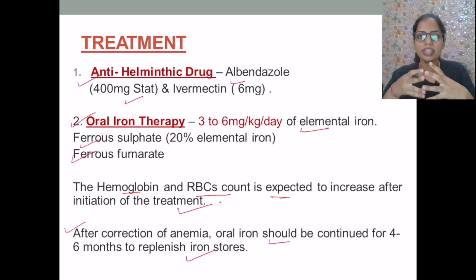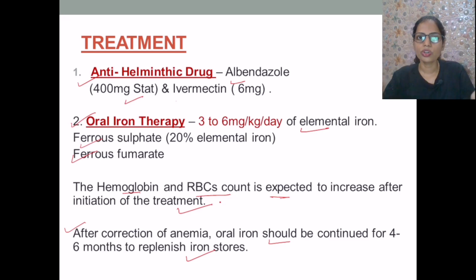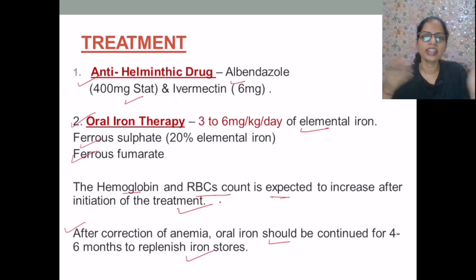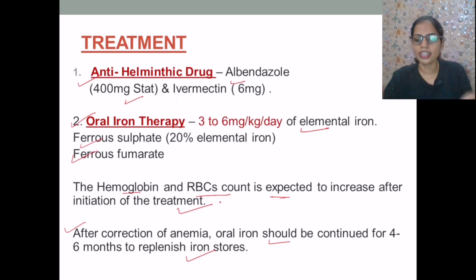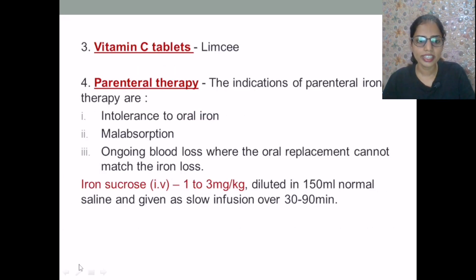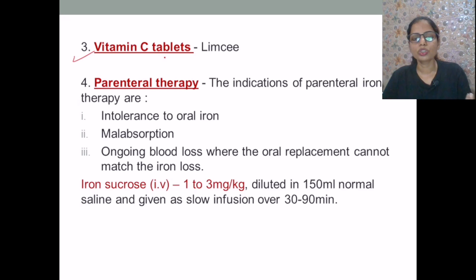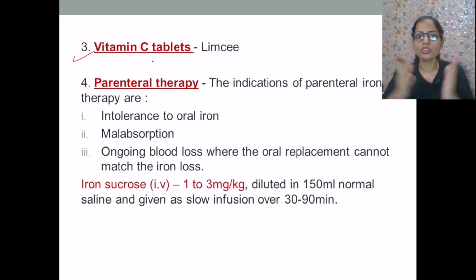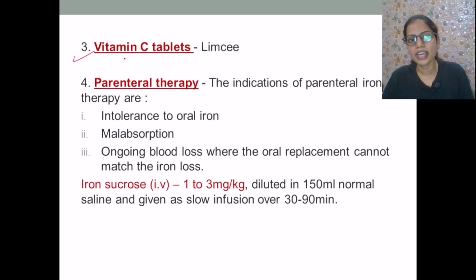To confirm that treatment is going in the right direction, after three to four weeks, the patient can be subjected to reticulocyte count to check if it is increasing. Additionally, we can give vitamin C tablets, which are important because they promote iron absorption and help convert iron into the ferrous form, which is the absorbable form of iron.